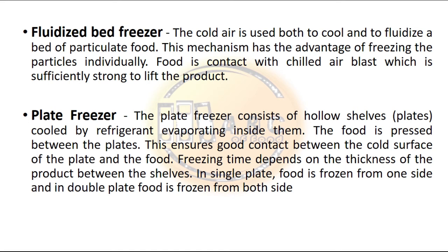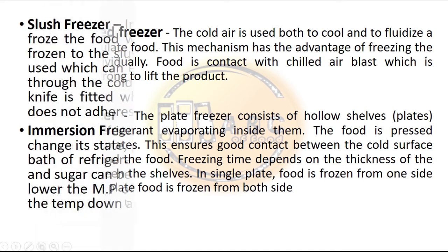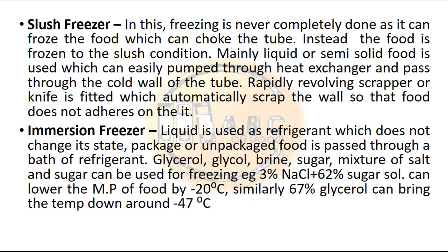Freezing time in the plate freezer depends on the thickness of the product between the cells. In the single plate freezer, food is frozen from one side; in the double plate freezer, food is frozen from both sides. In the slush freezer, freezing is never completely done, as full freezing could choke the tube. Instead, the food is frozen to a slush condition, and mainly liquid or semi-solid food is used, which can easily be pumped through a heat exchanger and passed through the cold wall of the tube.